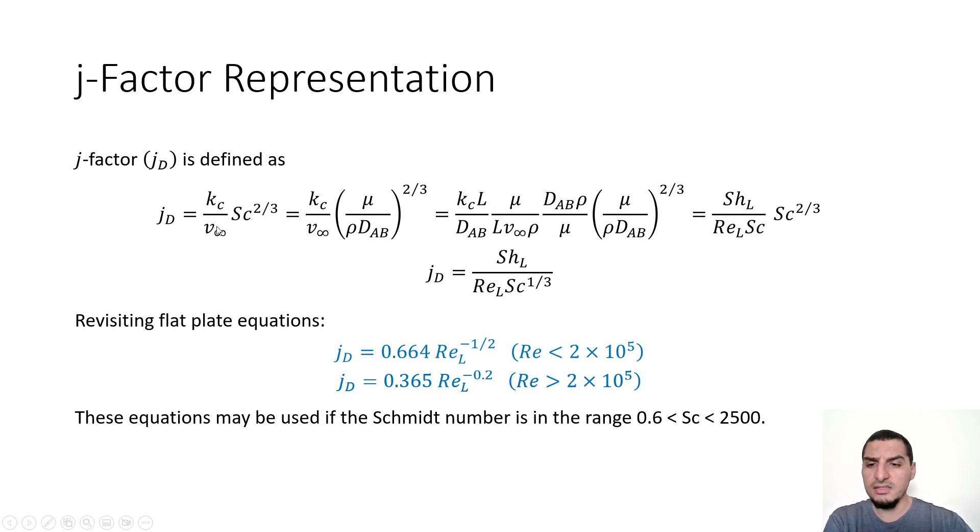At the end of the day, jh is kc V infinity multiplied by Schmidt power 2/3. With some mathematical simplifications you will reach this form, so it's a function of Sherwood number over Reynolds over Schmidt power 1/3. It's just a simple representation of the equation. Sometimes it's easier, sometimes it's not, so you have the freedom to use it if you want.